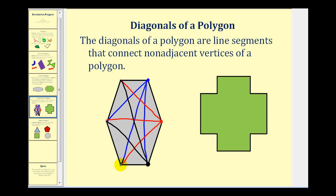Moving to the next vertex, some diagonals are already sketched, so we only need to sketch the remaining new diagonal here. Going to the final vertex, notice all the diagonals are already drawn. So from each vertex we can see there are three diagonals.